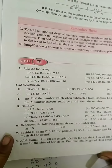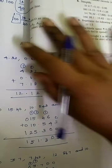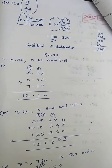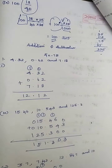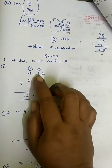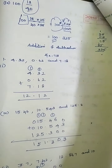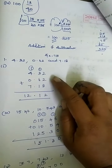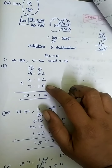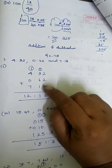Exercise 7b, first problem: add the following. The numbers are 4.32, 0.62 and 7.18. We are going to write the numbers one below the other, keeping the decimal part on the right-hand side and the integral part on the left-hand side. After writing the digits carefully, aligned on the tenths place and hundredths place, now we are going to start adding.